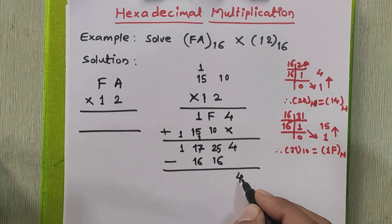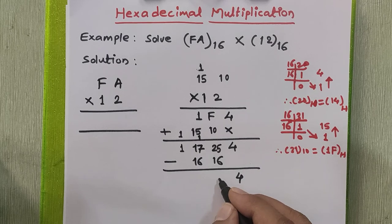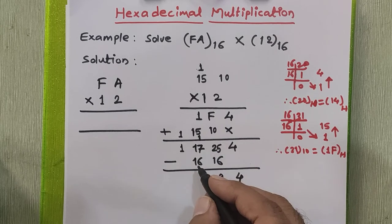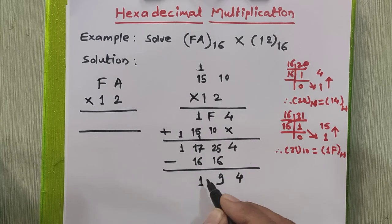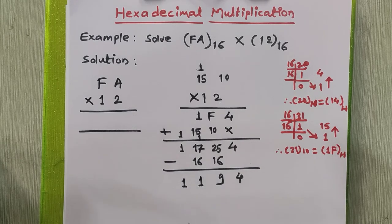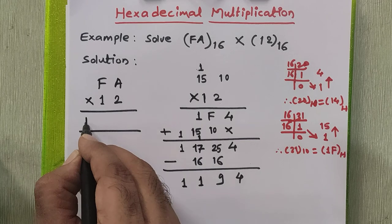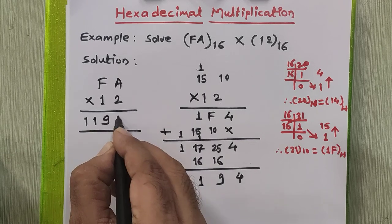So the result is 4. 25 minus 16 is 9. 17 minus 16 is 1. And this 1 as it is here. So this is our actual answer of this multiplication. I will write it here: 1, 1, 9, 4.